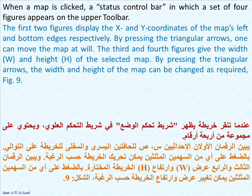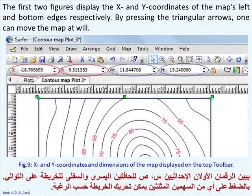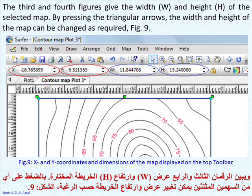When a map is selected, a status control bar in which a set of four figures appears on the upper toolbar. The first two figures display the X and Y coordinates of the map's left and bottom edges, respectively. By pressing the triangular arrows, one can move the map at will. The third and fourth figures give the width W and height H of the selected map. By pressing the triangular arrows, the width and height of the map can be changed as required, Figure 9.